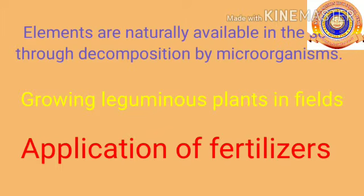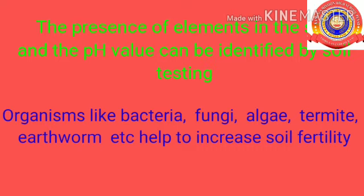To summarize how we can make the soil fertile: first, elements are naturally available through decomposition by microorganisms; second, growing leguminous plants in fields; third, application of fertilizers. Additionally, the presence of elements and pH value can be identified by soil testing, and organisms like bacteria, fungi, algae, termites, and earthworms help to increase soil fertility.